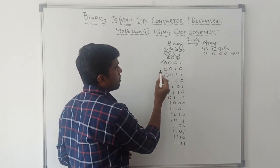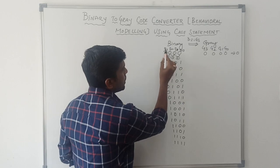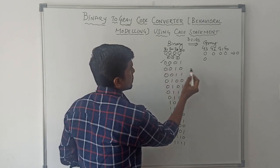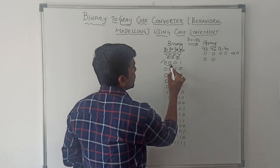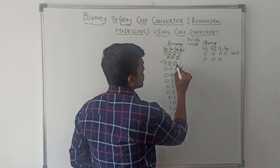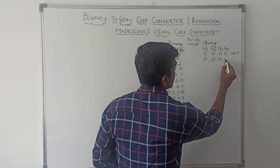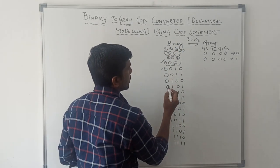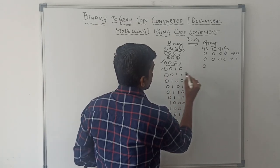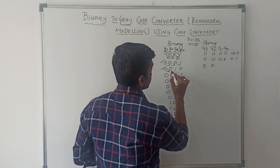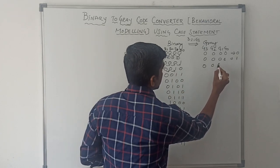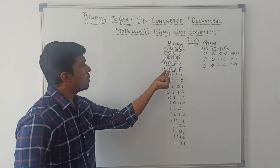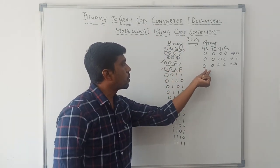For the second input value 0001: B3 equals G3, so this bit is also 0. Then 0 XOR 0 is 0, 0 XOR 0 is 0, and 0 XOR 1 is 1. The final result is 1. For the third input 0010: 0 XOR 0 is 0, 0 XOR 1 is 1 — after conversion binary 2 gives gray code 3.